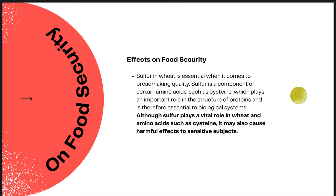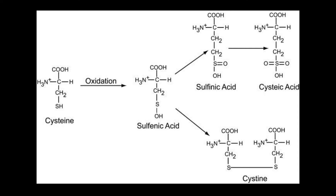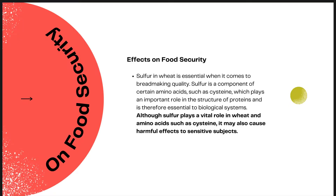Sulfur is a component of certain amino acids, such as cysteine, which plays an important role in the structure of proteins and is therefore essential to biological systems. Although sulfur plays a vital role in wheat and amino acids such as cysteine, it may also cause harmful effects to sensitive subjects.